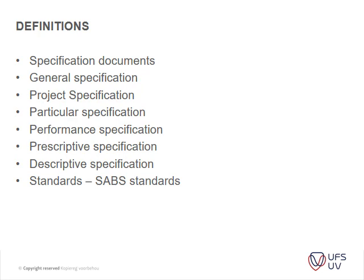Now to definitions - this is very important to know the differences between types. You have your specification documents, which usually comprise different sets of specifications. For instance, the architect might have a specific set including drawings, finishing schedules, etc., whereas the engineers might have very specific documentation on, for instance, how concrete is tested - what justifies a concrete test, should it be tested on seven days or 21 days, and what constitutes a set of concrete test cubes.